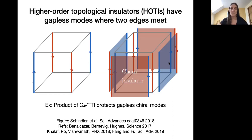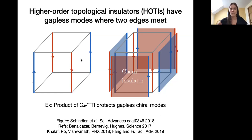In a higher order topological insulator, the bulk is gapped, the surfaces are gapped, but you have gapless modes where two surfaces meet. This left-hand picture shows an example of a higher order TI phase protected by the product of a C4 rotation and time reversal. All the white space is gapped — all surfaces are gapped — but where two surfaces meet there's a gapless mode. In this phase the gapless modes are chiral, with two going down and two going up.